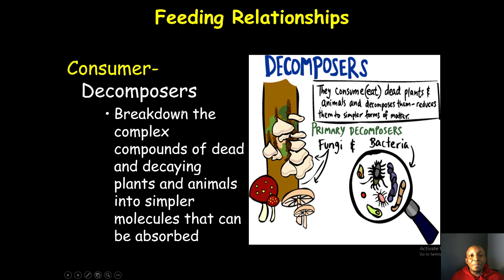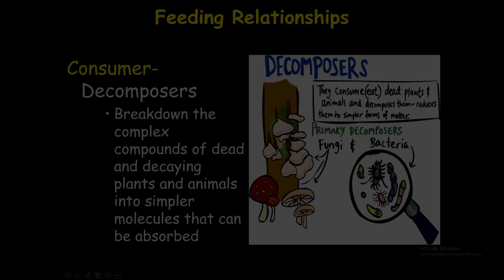Our last type of consumer is the decomposer. Decomposers break down complex compounds of dead and decaying plants and animals into simpler molecules that can be absorbed. The primary decomposers are fungi and bacteria. They return nutrients back to the soil, which plants absorb to help them grow — this is how decomposers help with the cycling of matter and the overall cycle of life.